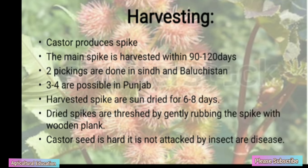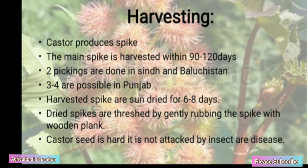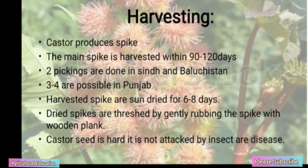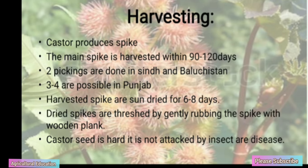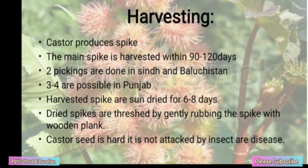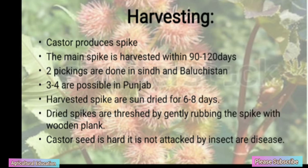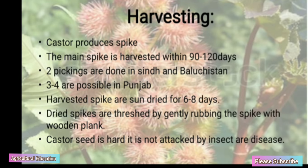Harvesting: Castor produces spikes. The main spike is harvested within 90-120 days. Two pickings are done in Sindhu; 3-4 are possible in Punjab. Harvested spikes are sun-dried.